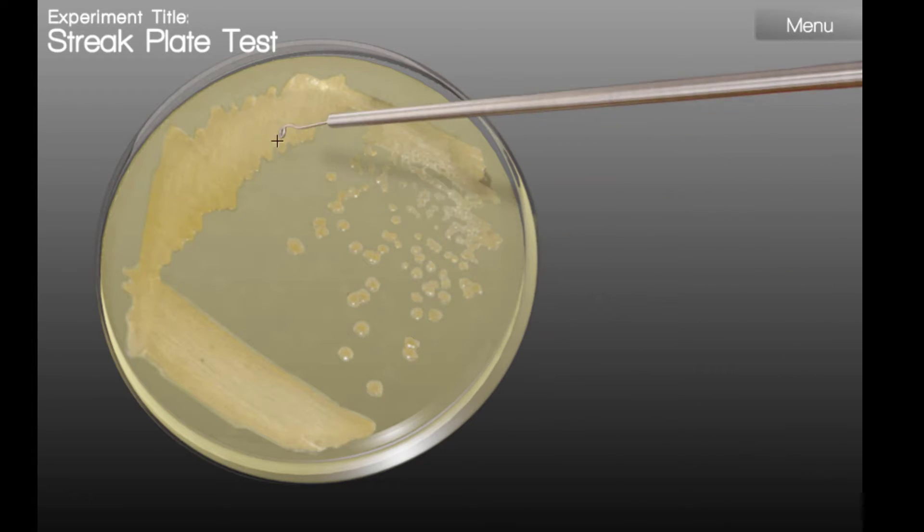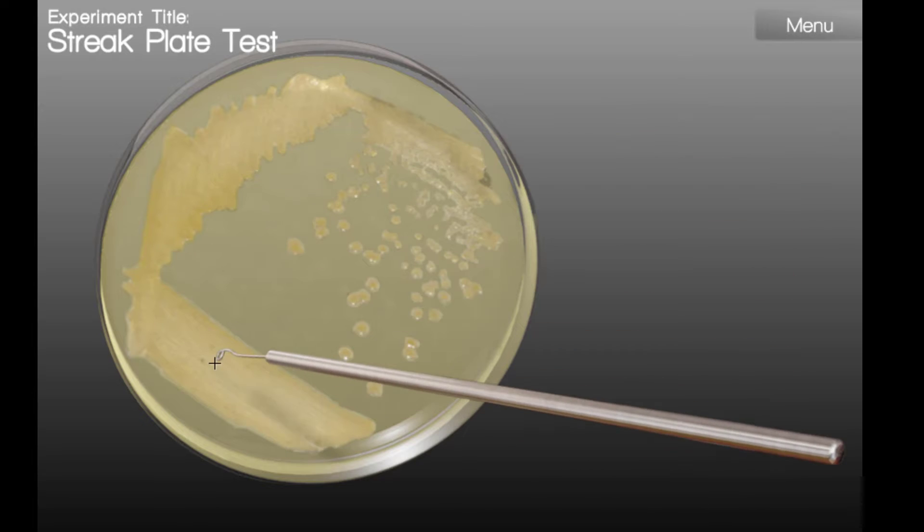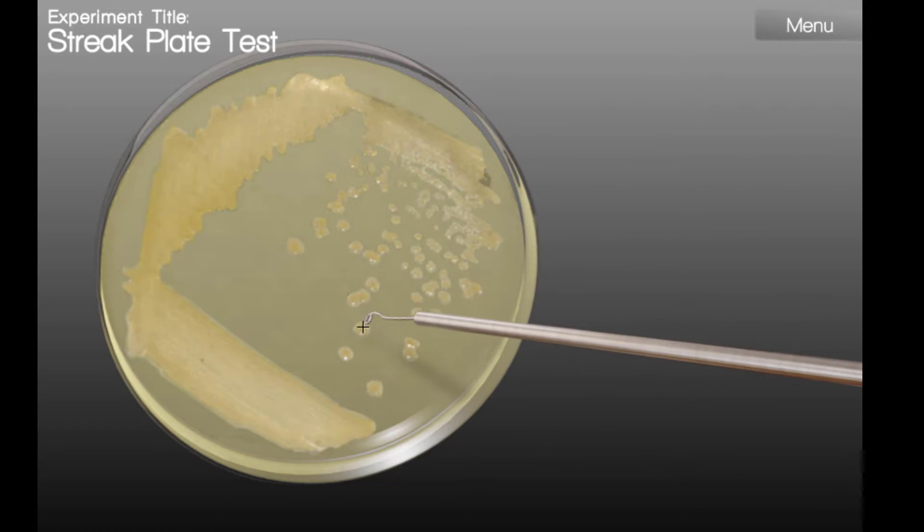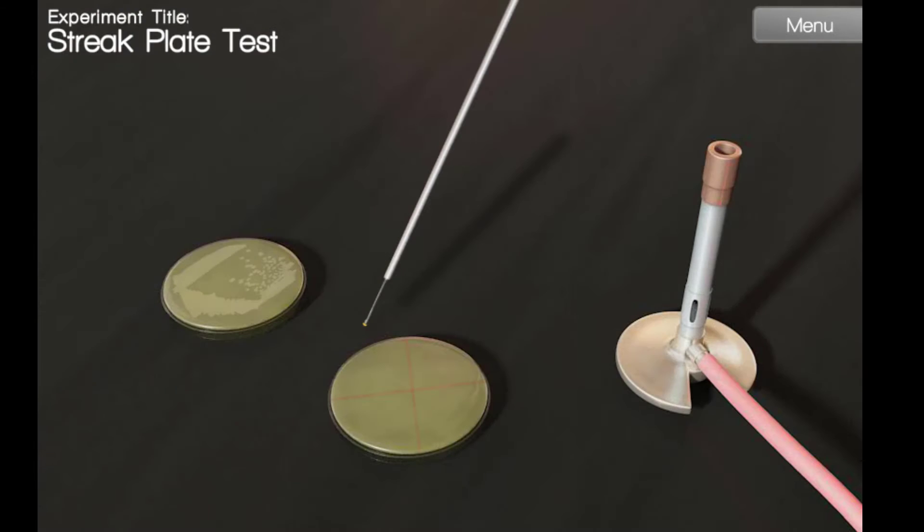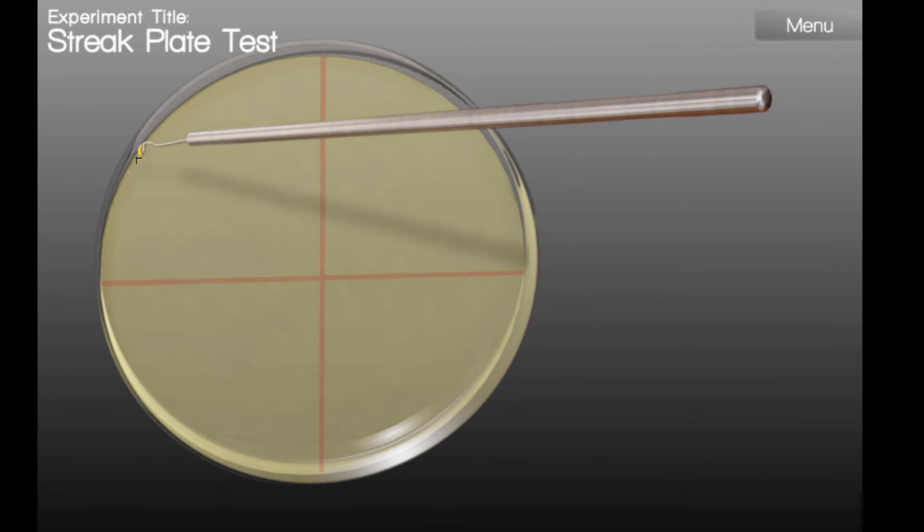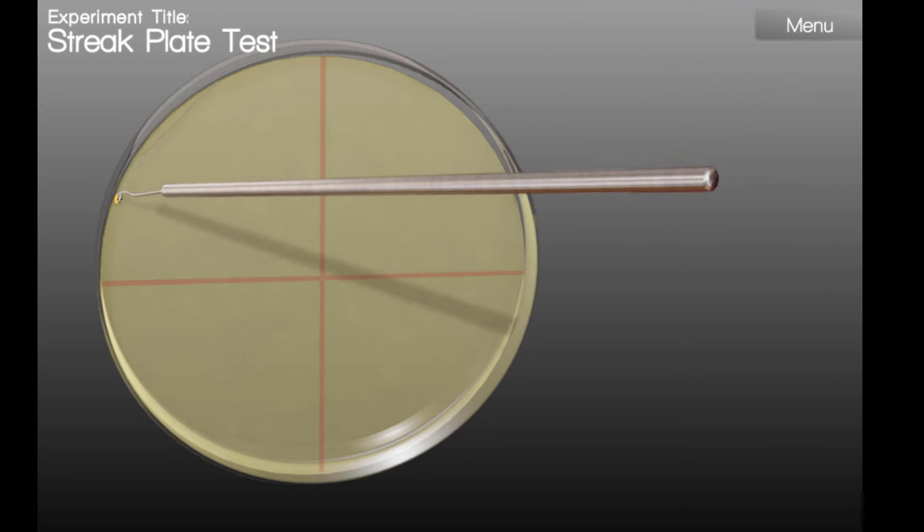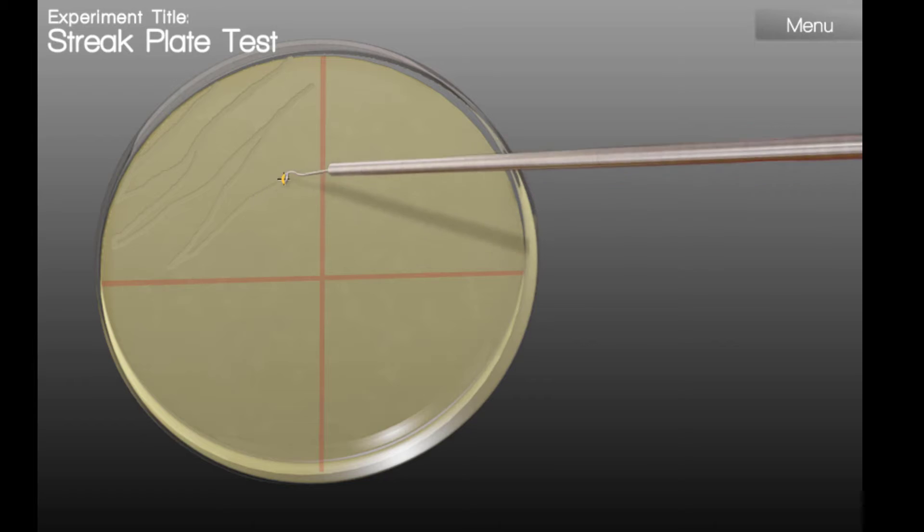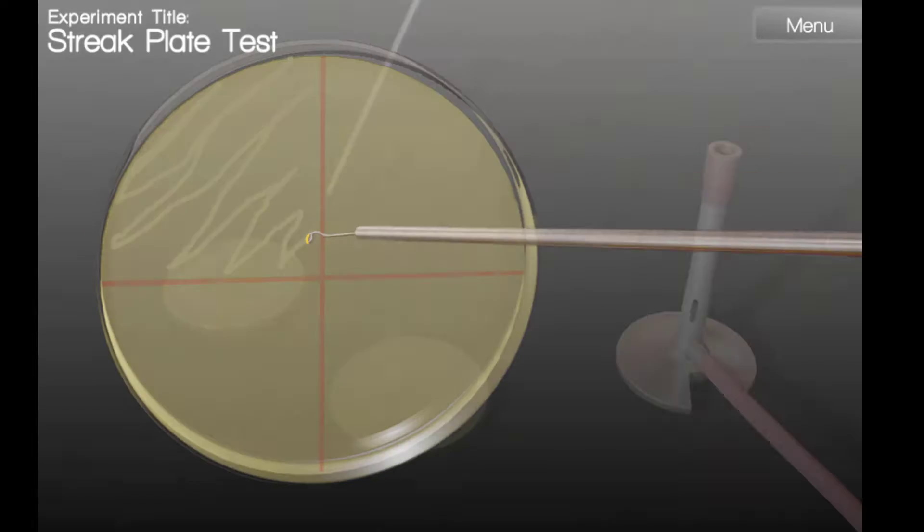You want to avoid areas that look like this or this. I think this looks like a nice colony. Now that I have picked my colony, I'm ready to streak the first quadrant of the plate. When streaking the first quadrant, you'll want to make sweeping motions going back and forth, but you'll want to make sure that you stay within that first quadrant.